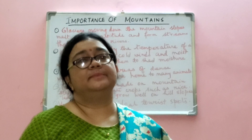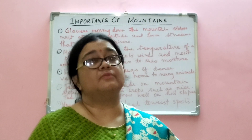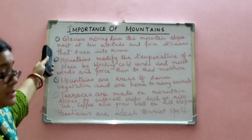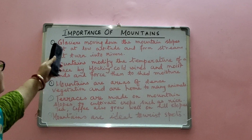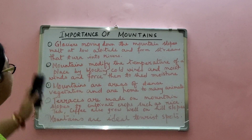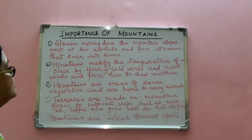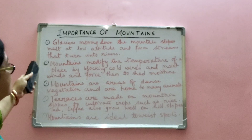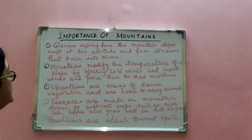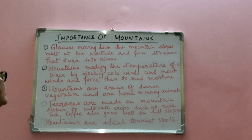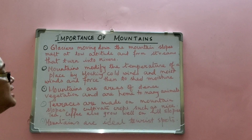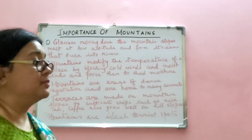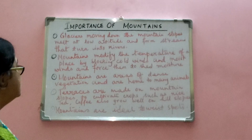Mountains play a very important role in our lives. The first importance is that glaciers moving down the mountain slopes melt at low altitude and form streams that turn into rivers. The second importance is that mountains modify the temperature of a place by blocking cold winds and moist winds, forcing them to shed moisture.